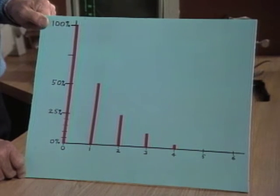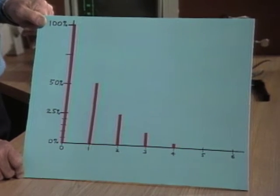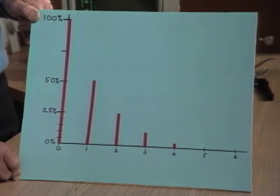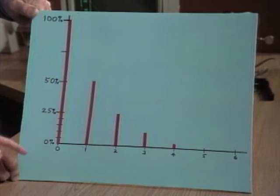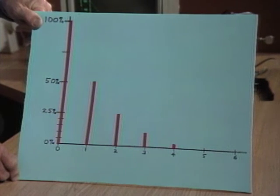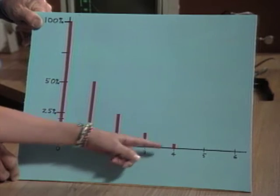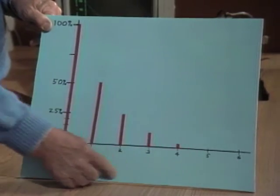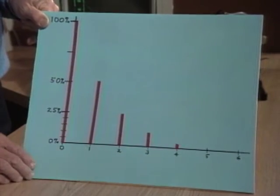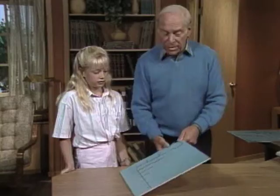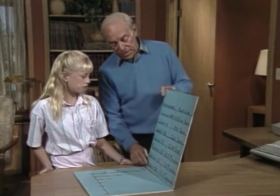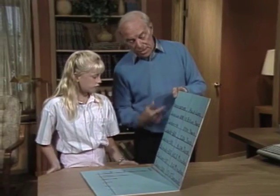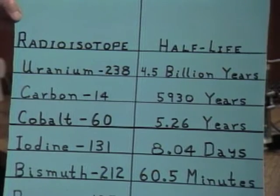Now what happened at the second hour? Well, halfway between 50 is 25, so it went to 25. And then it keeps going half. In this case, I only did it for four time intervals. Scientists have measured the radioactive half-life of a lot of different materials, and here are some of the most important ones.